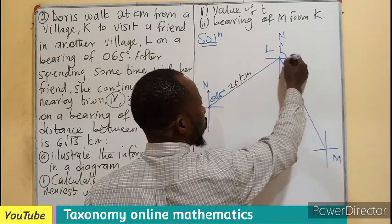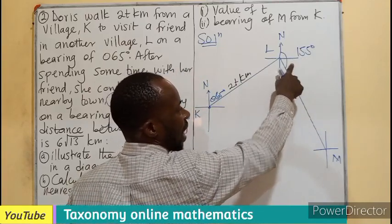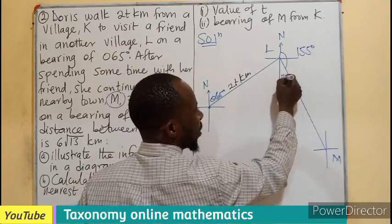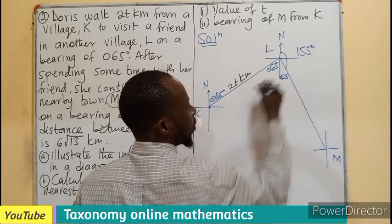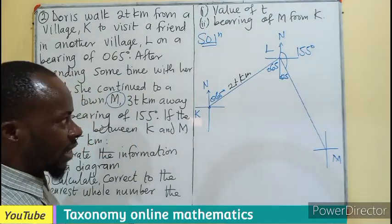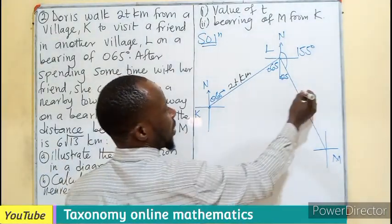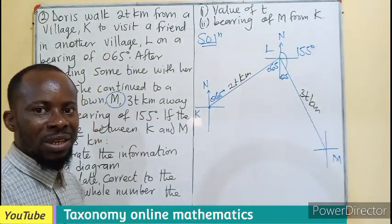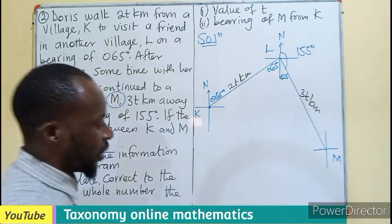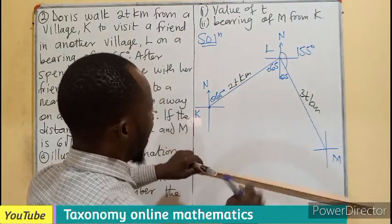All the way to this is our 155 degree. But here is 65, making here to be 25. This will also be 65. Good. Now, you can see that the length of this is longer for a reason. It is 3T kilometers, which is longer than 2T. So we make it a bit longer so that we can be able to get some little accuracy in our drawing.